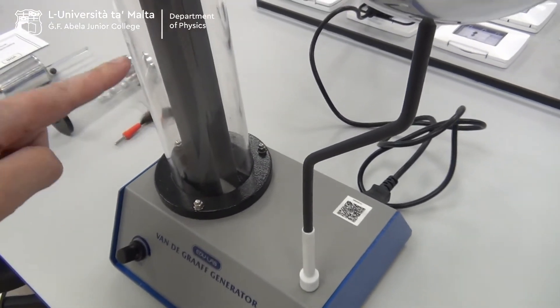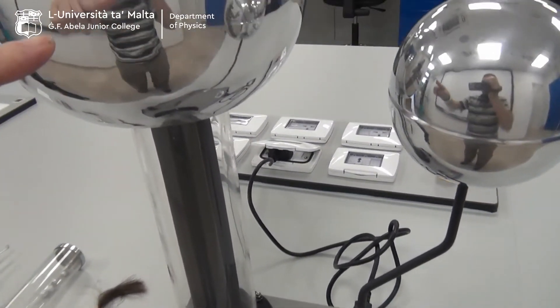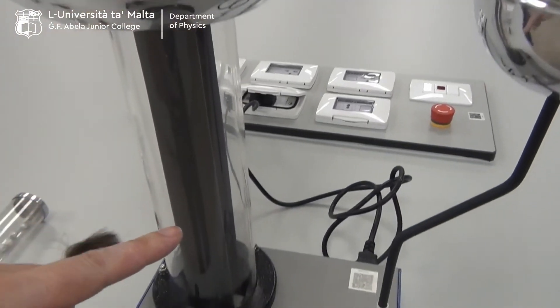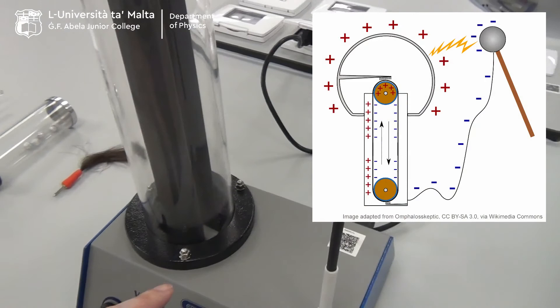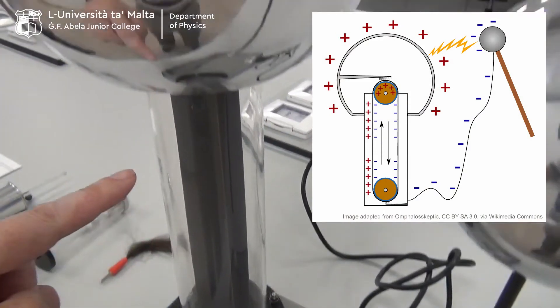The rubber belt goes round and round up to the dome and back down to this bottom part. As it rotates, it carries electric charge from down here to the upper dome.